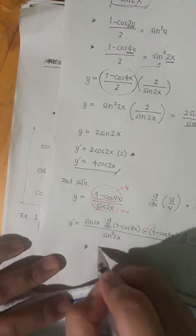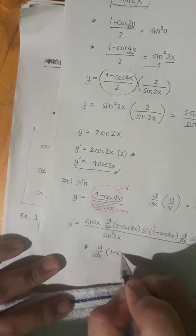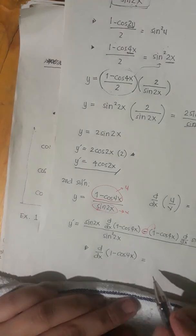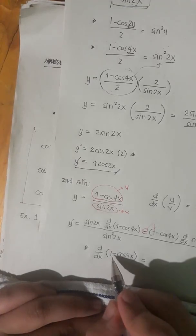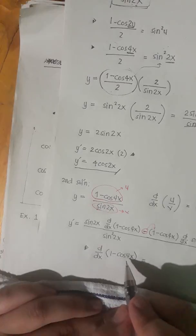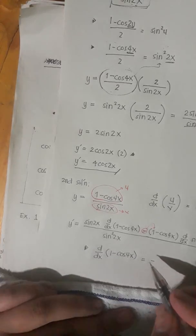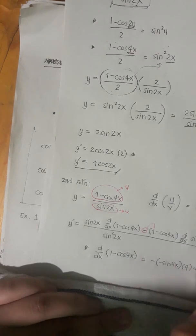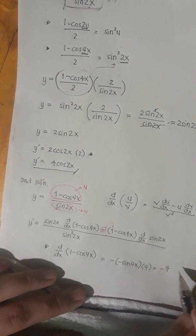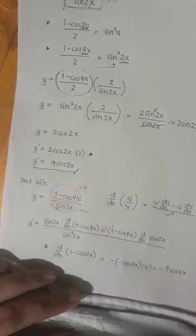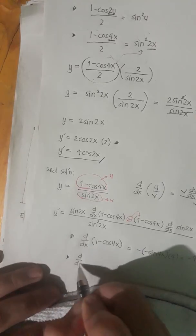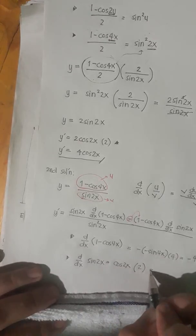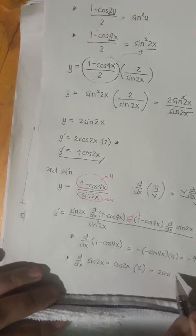Let's compute the derivatives separately. The derivative of 1 minus cosine 4x: derivative of 1 is 0, and derivative of negative cosine 4x is negative times negative sine of 4x times 4, which equals negative 4 sine of 4x. For the derivative of sine 2x, that's cosine of 2x times the derivative of 2x, which is 2 — so simply 2 cosine of 2x.